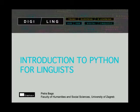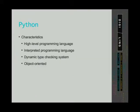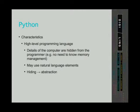So let's explain what Python is and what are some of its characteristics. Python is a high-level interpreted object-oriented programming language with a dynamic type checking system. A high-level programming language means that the details of the computer are hidden from the programmer — programmers don't need to know, for example, how the memory is managed on the computer. This process of hiding in computer science and software engineering is called abstraction. It helps hide the complexities of a system so other parts don't have to bother with them.